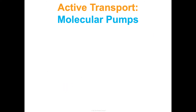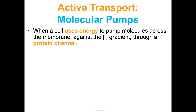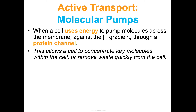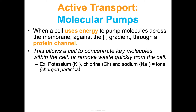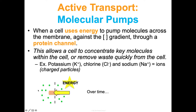The last three things are the types of active transport, which use energy to move things against the concentration gradient, from low to high concentration. One type is molecular pumps: a cell uses energy to pump molecules against the concentration gradient — from low to high — through a protein channel. This is how the cell can concentrate molecules on either side or quickly remove waste. Ions like potassium, chlorine, and sodium move this way. Unlike facilitated diffusion, molecular pumps go against the gradient and require energy, resulting in higher concentration on one end rather than equal distribution.